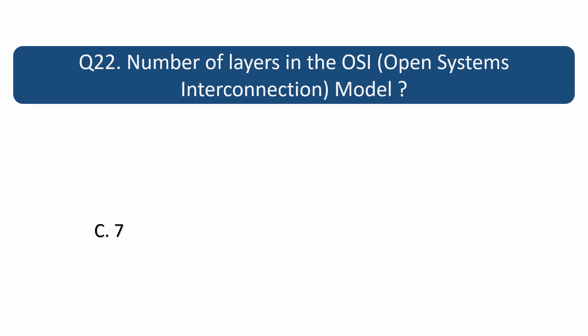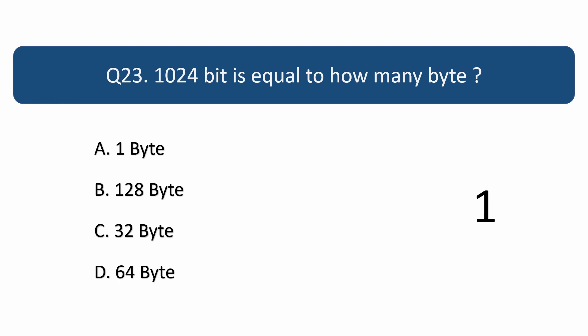Question number 23. 1024 bits is equal to how many bytes? Answer is B. 128 bytes.